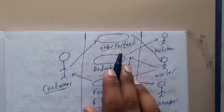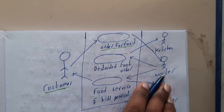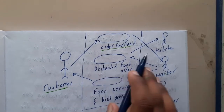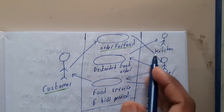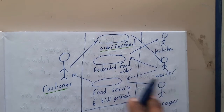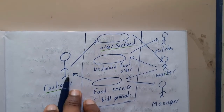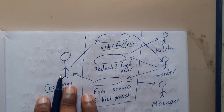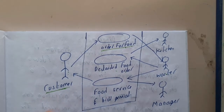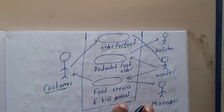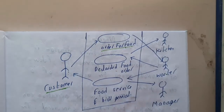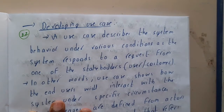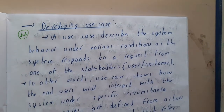For example, the customer will be requesting — he is ordering food. Once he orders, the request goes to the waiter, who enters the food details. The kitchen reads it and prepares the food. The waiter then delivers it to the customer, and once the customer is done eating, the bill is delivered, which was collected from the manager.